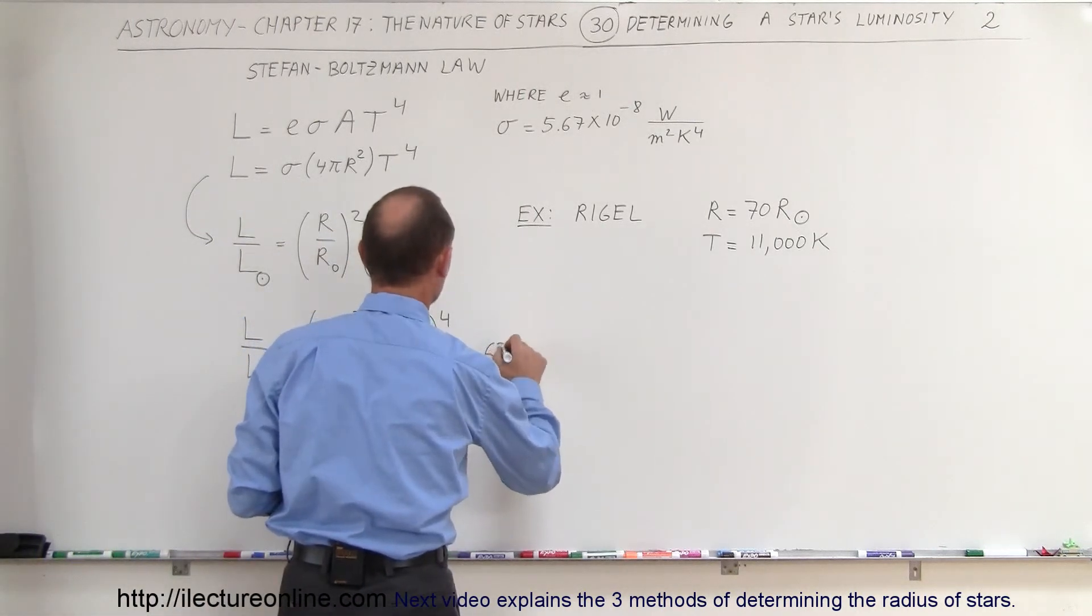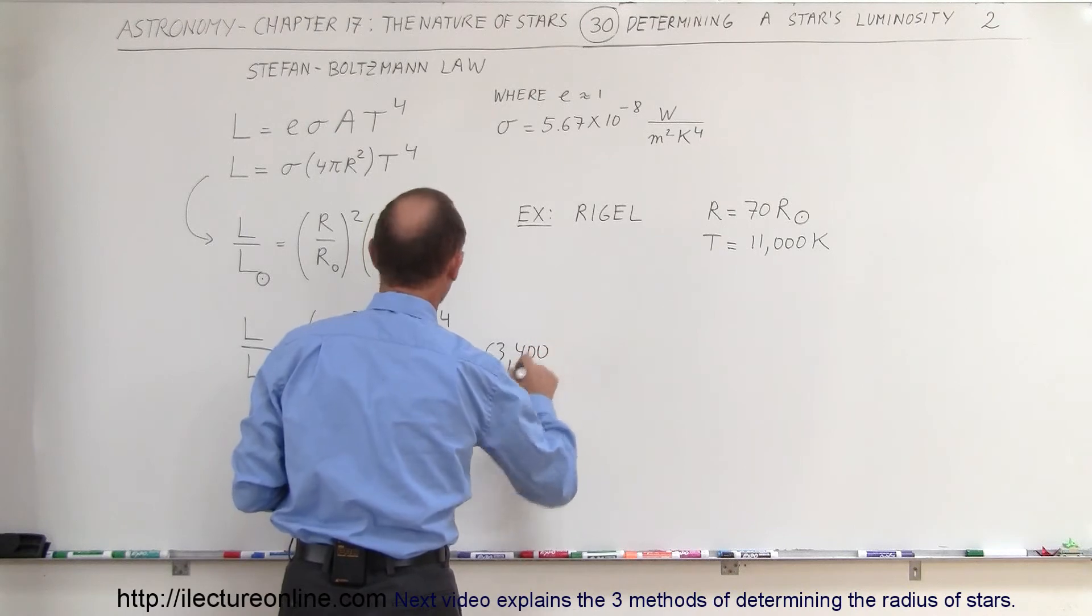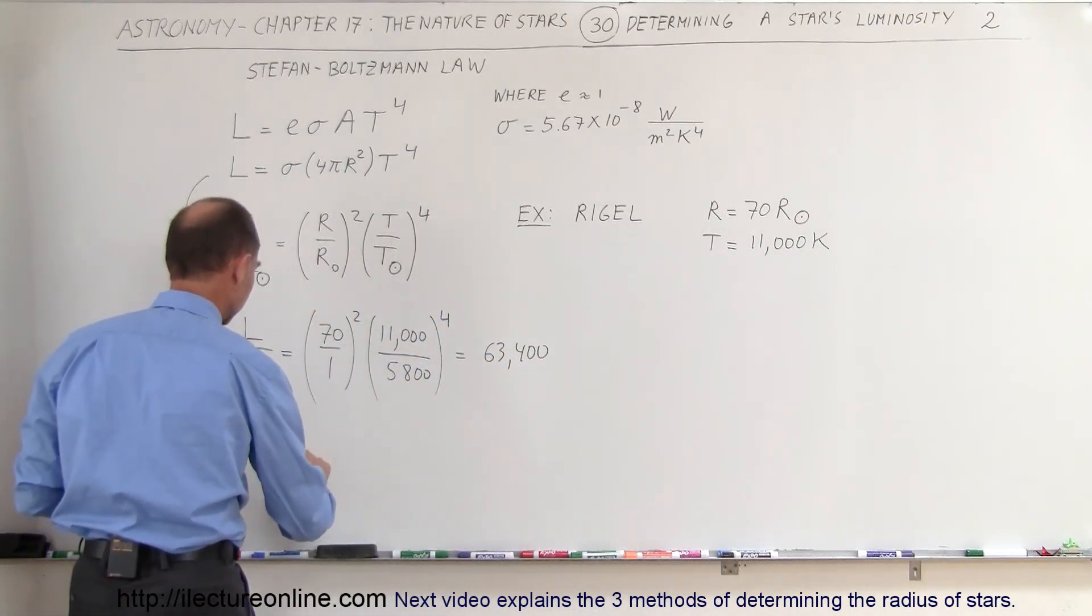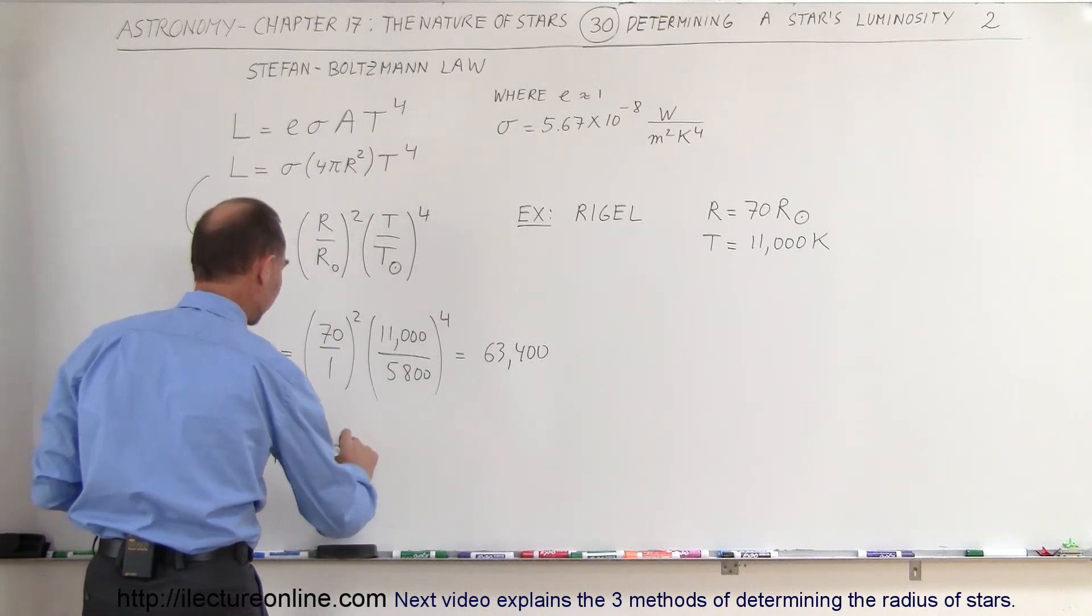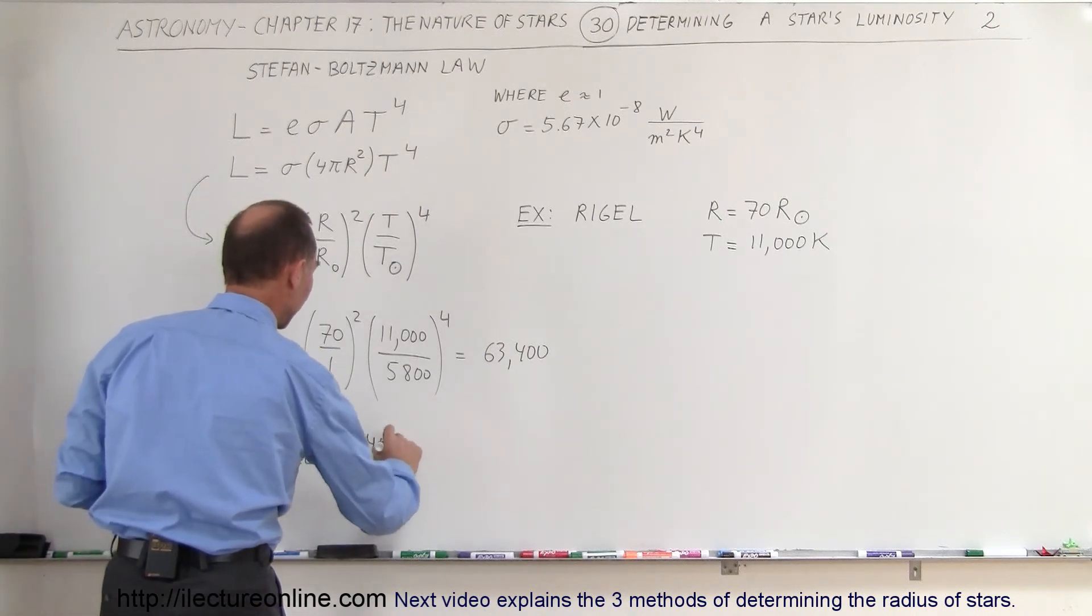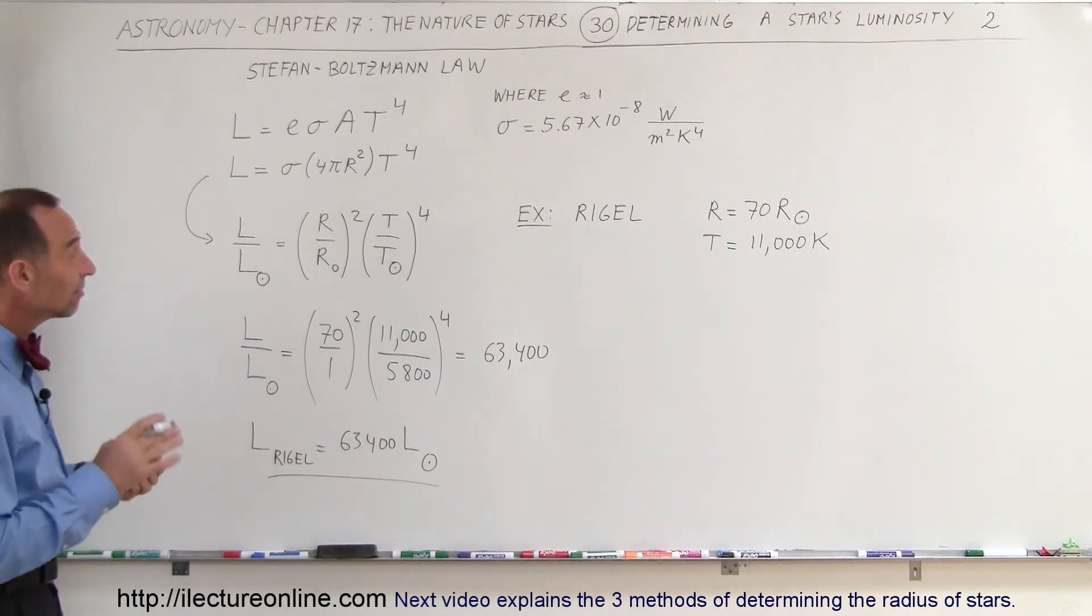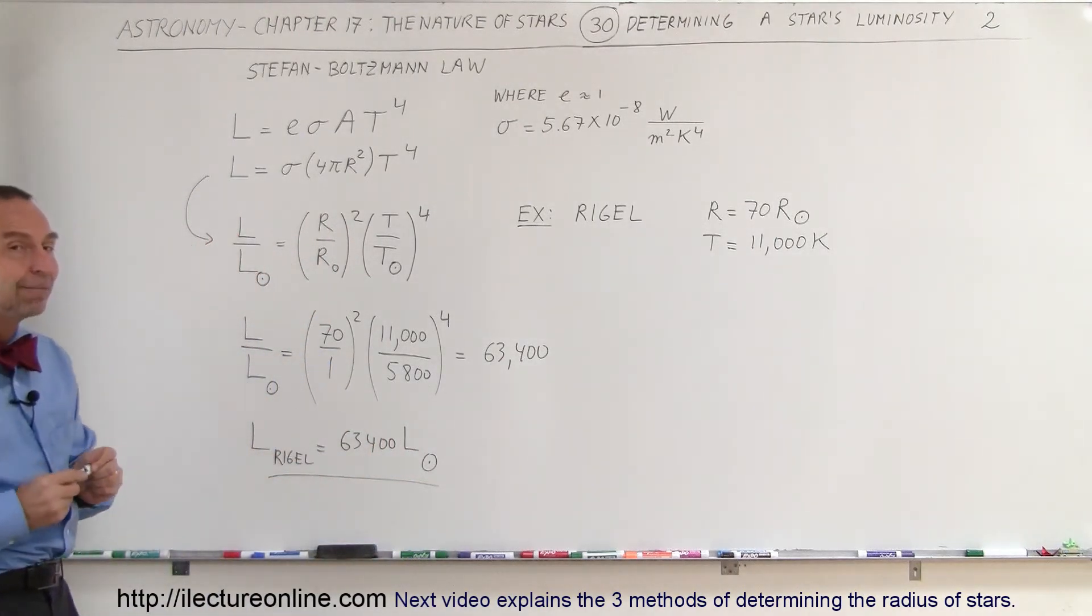So that would be 63,400, which means that the luminosity of Rigel is about 63,400 times the luminosity of the sun. So simply by knowing the radius and the temperature, we can figure that out.